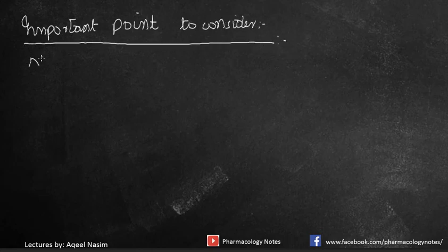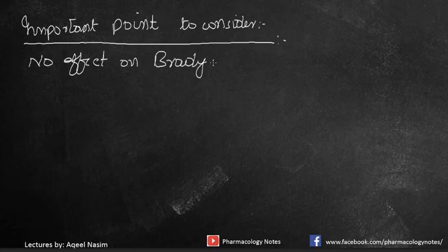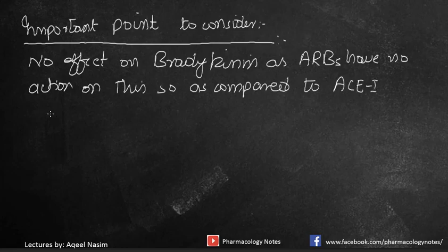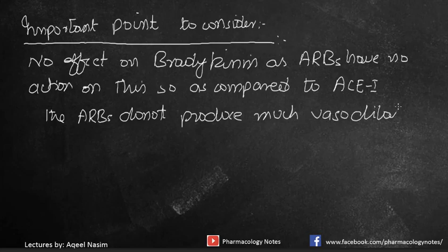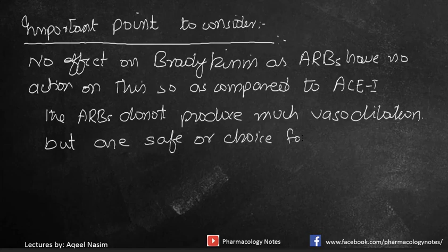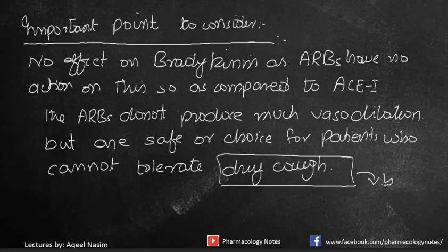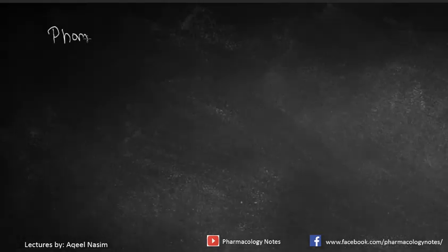An important point often asked is: what is the difference between ARBs and ACE inhibitors? ACE inhibitors have an effect on the kallikrein-kinin system, which prevents bradykinin metabolism. When ARBs are given, they have no effect on bradykinin. Thus, compared to ACE inhibitors, ARBs do not produce as much vasodilation, since they have no interaction with bradykinin metabolism. However, ARBs are safer and are the drug of choice for patients who cannot tolerate dry cough, which is associated with the high bradykinin levels caused by ACE inhibitors.